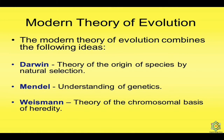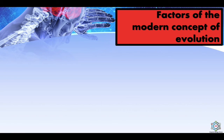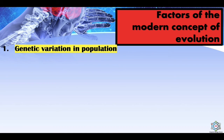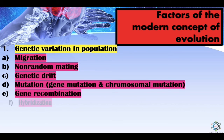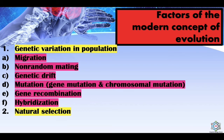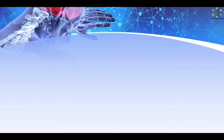According to the modern theory of evolution, it combines the following ideas: Darwin's theory of the origin of species by natural selection; Mendel's understanding of genetics; and Weismann's theory of the chromosomal basis of heredity. The factors of the modern concept of evolution are: genetic variations in populations — arising through migration, non-random mating, genetic drift, mutation, gene recombination, and hybridization; second, natural selection; third, speciation; and fourth, reproductive isolation.